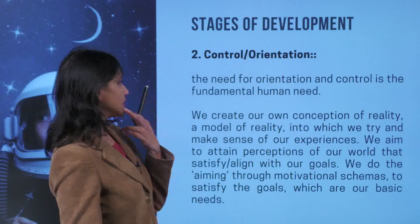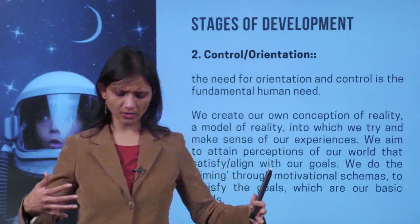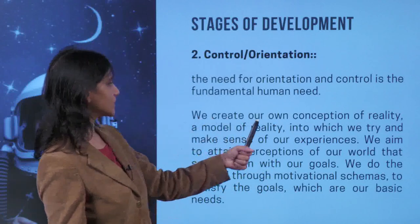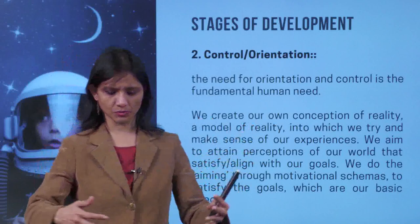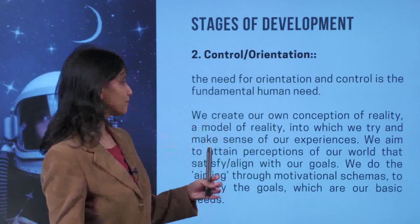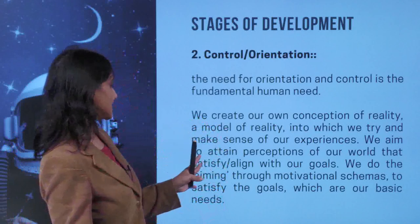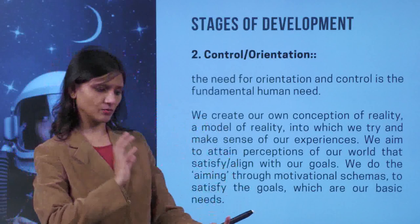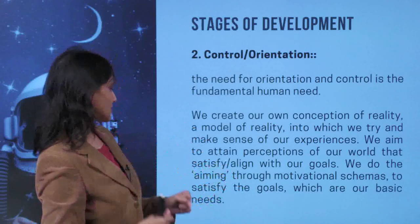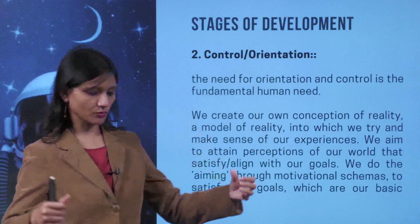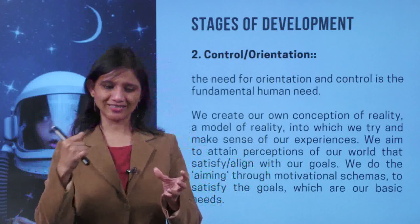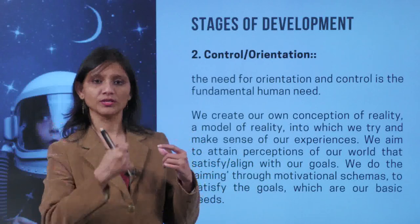The need for orientation and control is a fundamental human need. We want to control everything around us — we create our own conception of reality, a model of reality, into which we try to make sense of our experiences. We aim to have perceptions of our world that satisfy or align with our goals. We aim through motivational schemas to satisfy goals which are our basic needs. This orientation and control drives us to set goals, set objectives, and aim towards them.